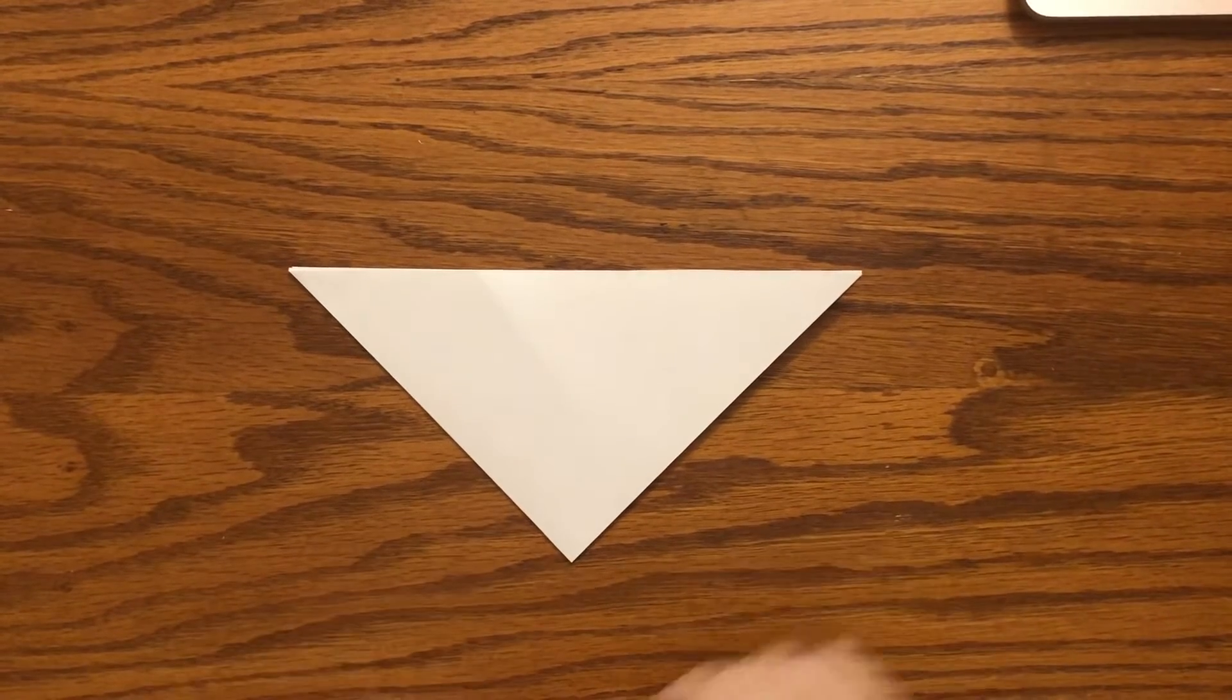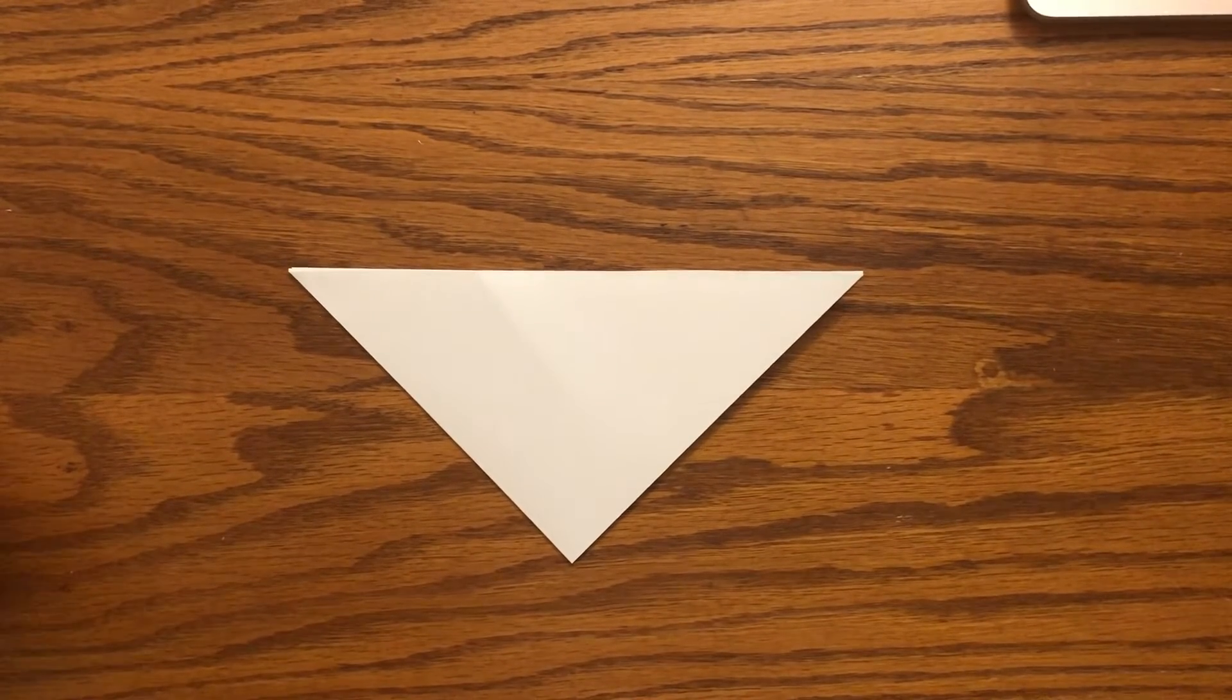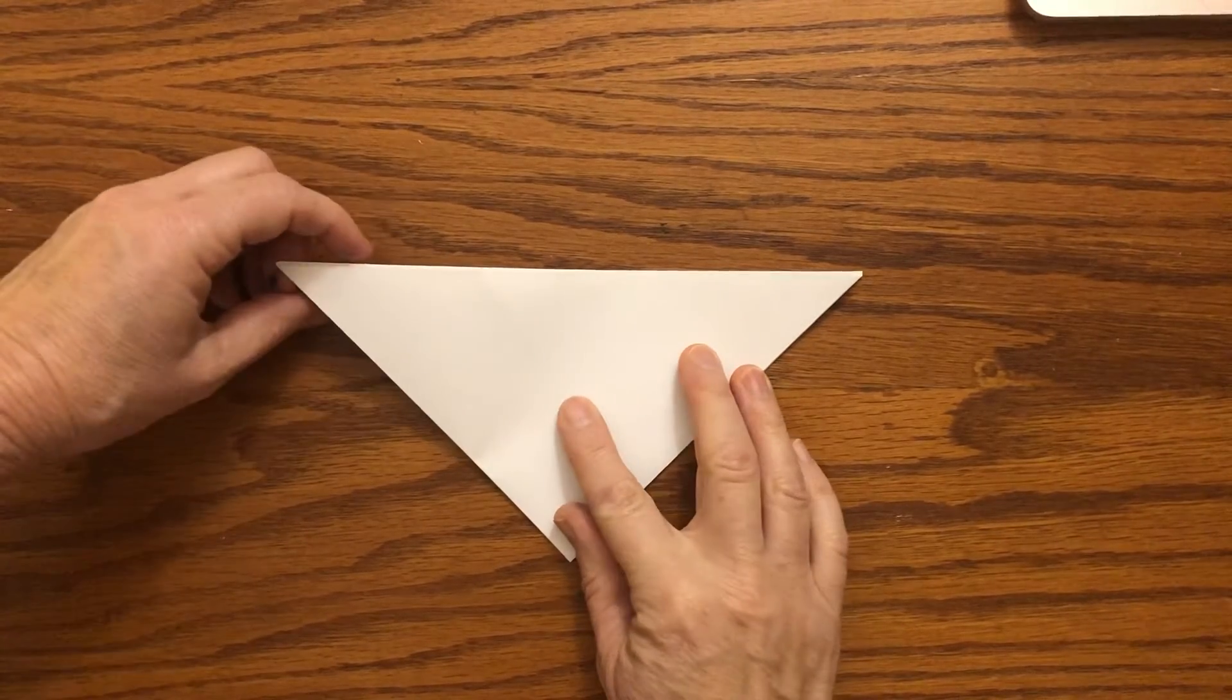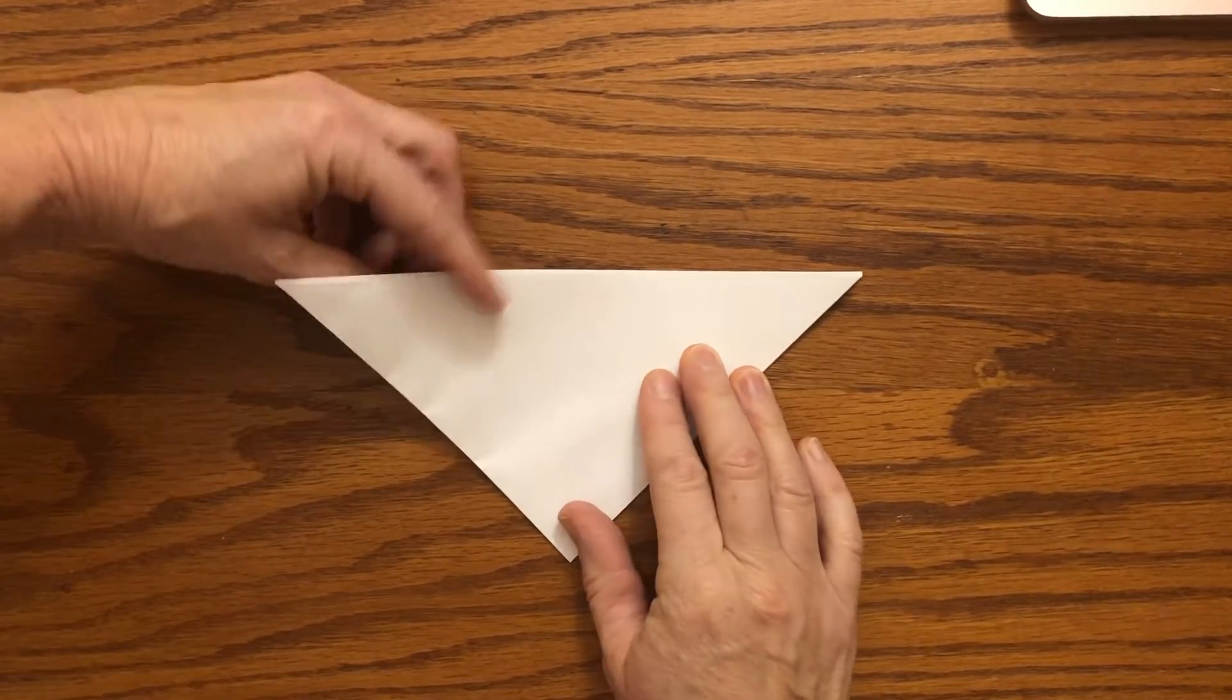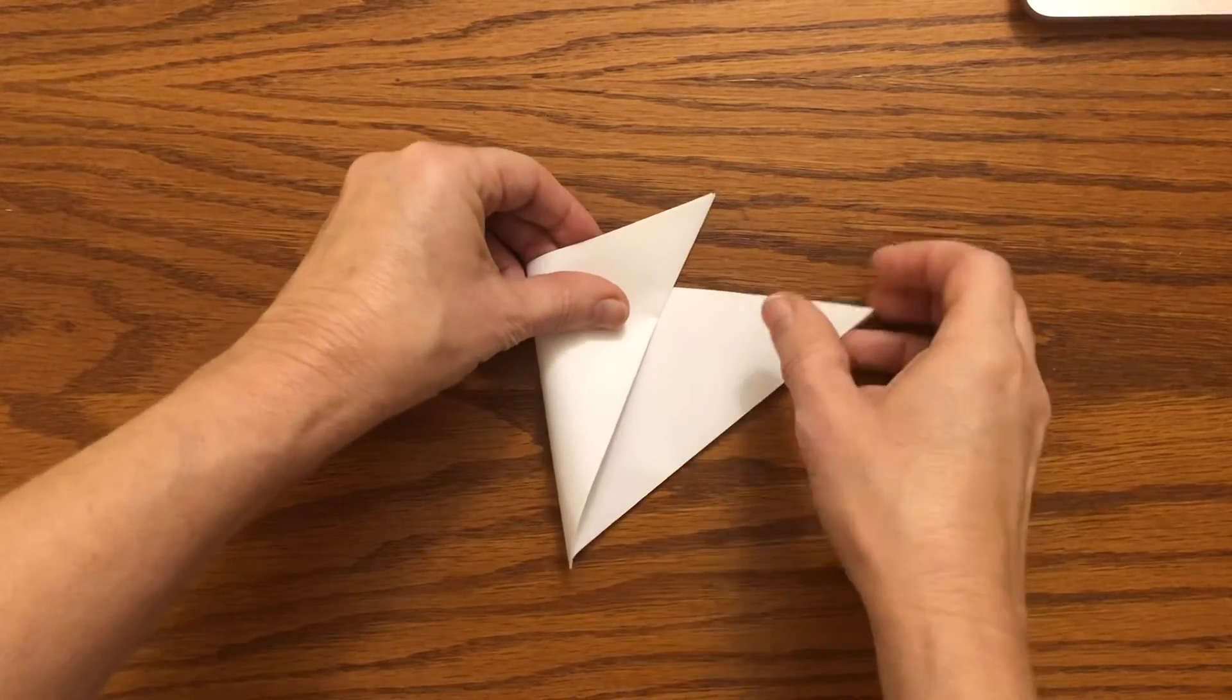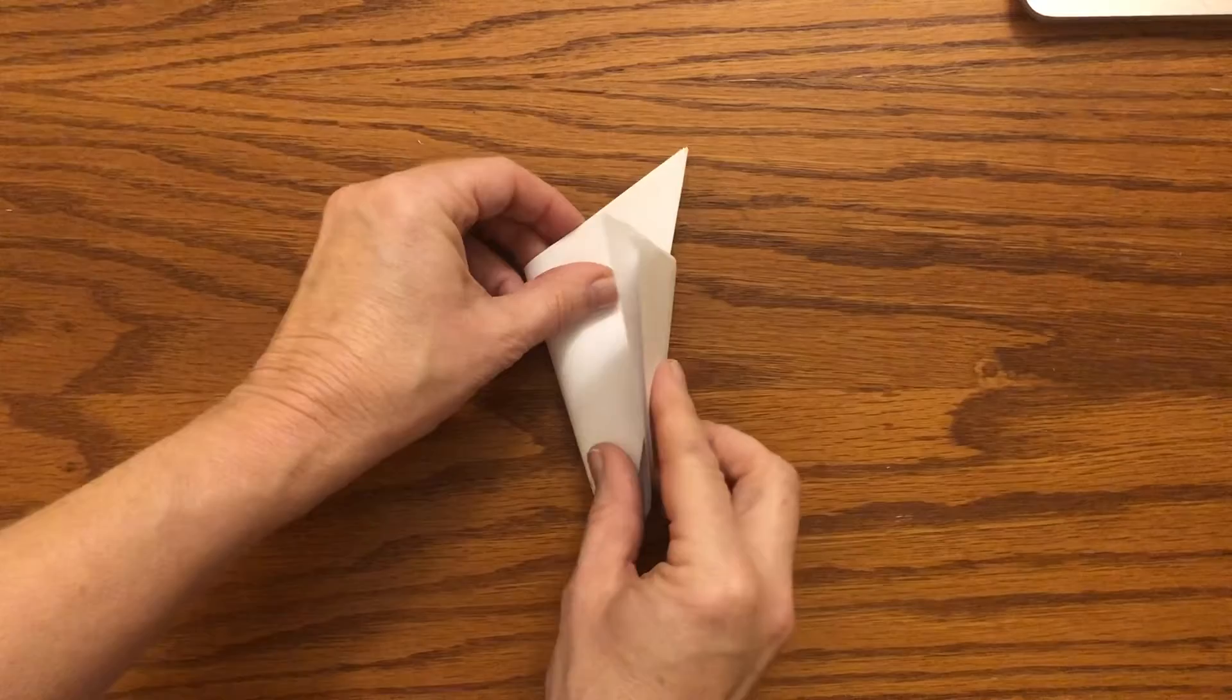Okay friends, here we are, step number three. So what we're actually going to be doing now - these are the last folds really. We're going to be folding the left side over and then the right side over on top so they overlap each other.